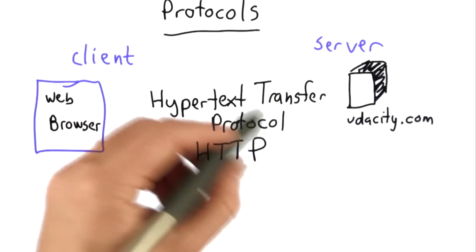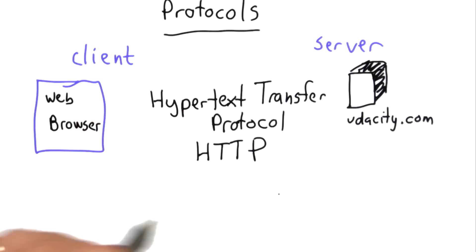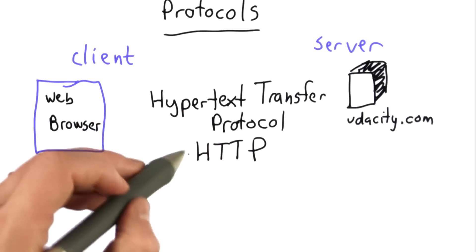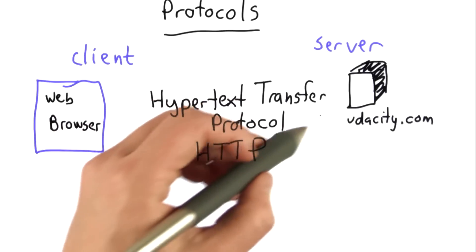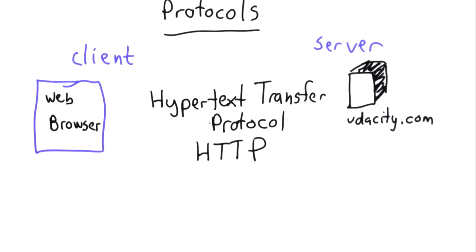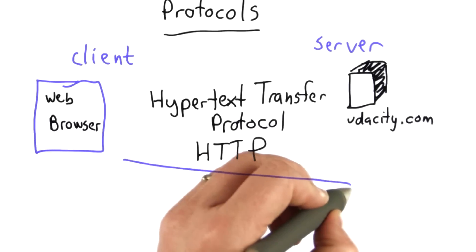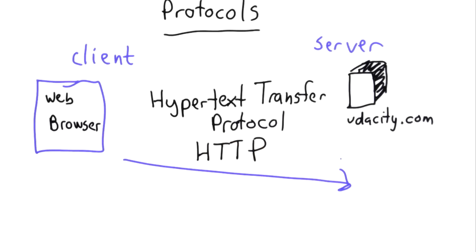When you look in your browser, almost all the URLs that you use start with HTTP. That indicates that the protocol you should use to talk to the server that you're requesting a document from is this protocol called Hypertext Transfer Protocol. And it's a very simple protocol — there aren't too many messages. There are actually only two main messages, and there's only one we'll talk about.